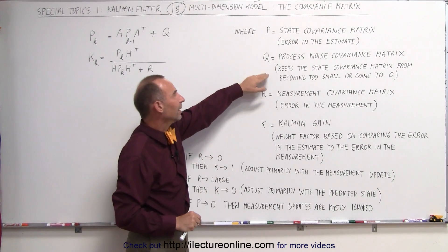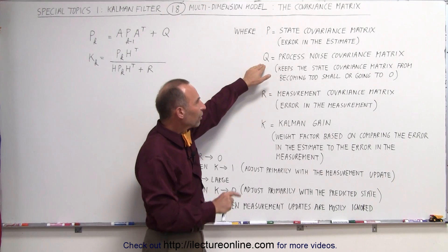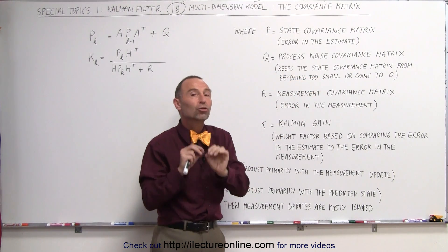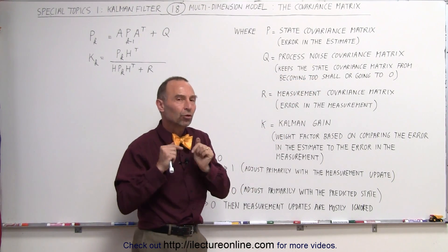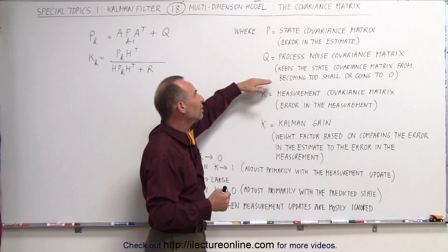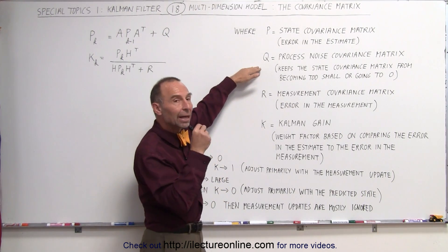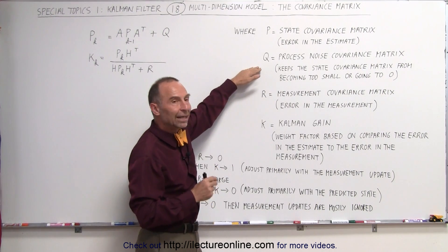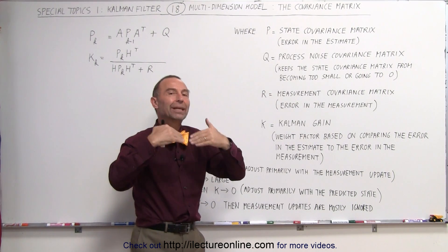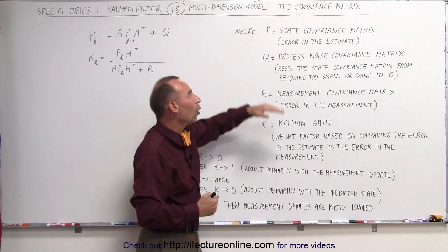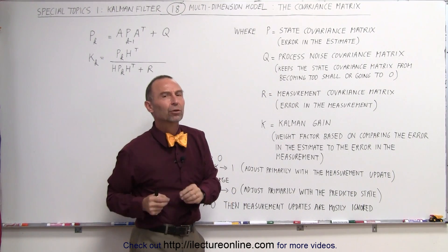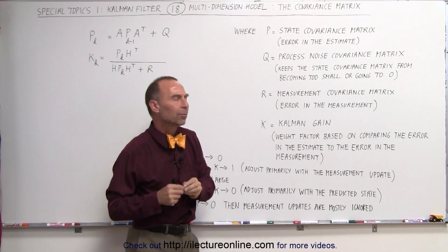The process noise covariance matrix keeps the state covariance matrix from becoming too small and eventually going to zero. The Kalman gain only works if we have a reasonable expectation of the error in the estimation. If that error goes to zero because we don't properly account for all the various things that could offset the estimation, we don't get very good results with the Kalman filter.